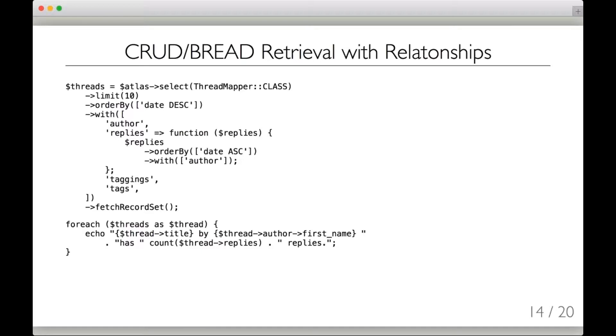Once we've got that in hand, it becomes very easy to do basic CRUD or BREAD operations. They're very trivial. In this particular example, we're going to go out to Atlas and say select through the thread mapper the most recent 10 threads. And when you bring me back these thread records, I want you to bring them back with these related elements. Give me back the author on each one, the replies, the taggings, the tags. Because each of these is happening through a separate mapper as a separate query, we have a great amount of power over each individual query. We can say, when we get the replies back, I want the replies ordered by date ascending instead of descending. And when you bring me back the replies, bring me back the related authors on each reply.